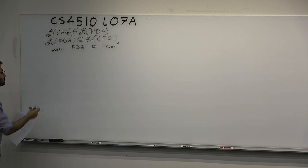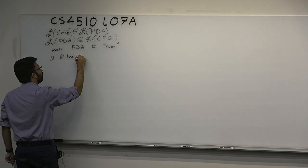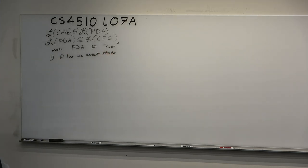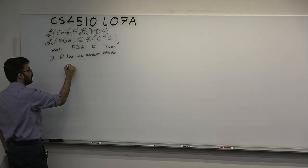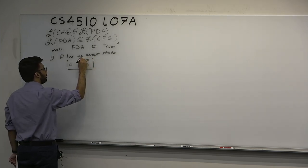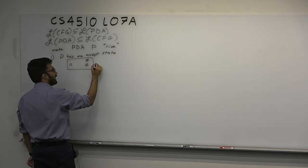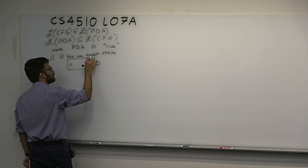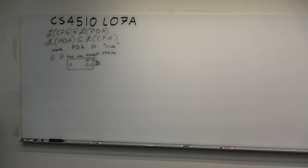First we're going to make the PDA "nice." PDA P is some PDA, and we're going to try to create a grammar G such that if a string is accepted by PDA P, then the grammar has to produce it. The first condition: P has one accept state. A PDA can have many accept states. We convert the PDA so it only has one accept state by adding a new accept state and epsilon-transitioning to it from the old accept states.